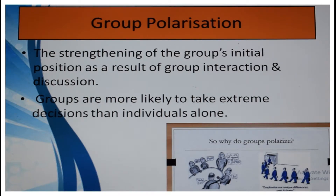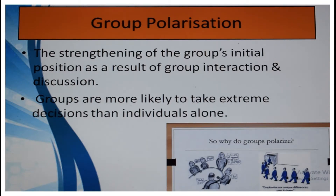According to the book, groups show another tendency — that is group polarization. Sometimes groups are not only prone to group think but also group polarization. It has been found that groups are more likely to take extreme decisions than individuals, because individuals alone cannot take such extreme decisions.